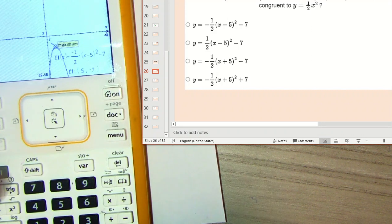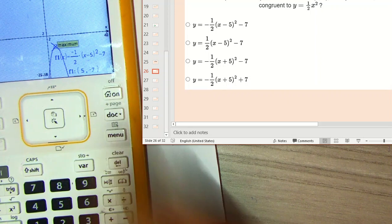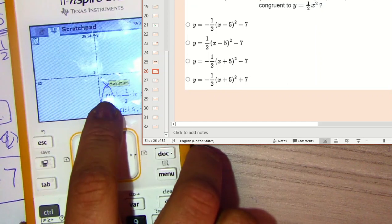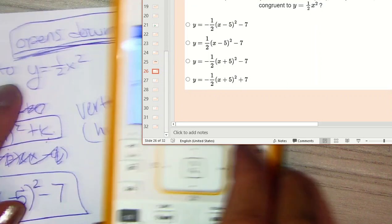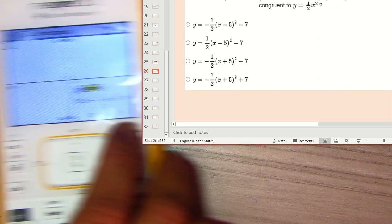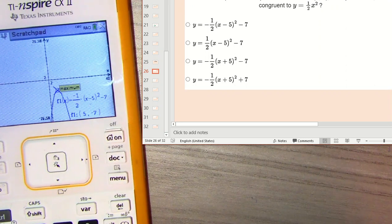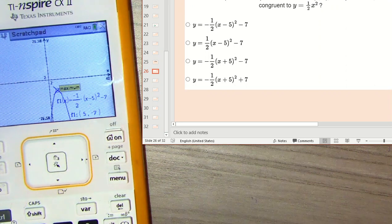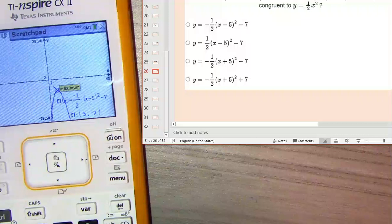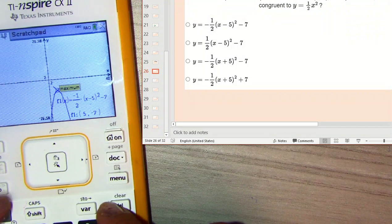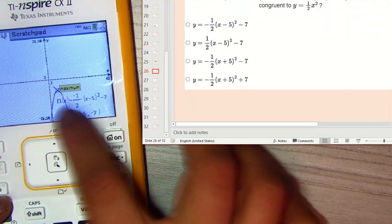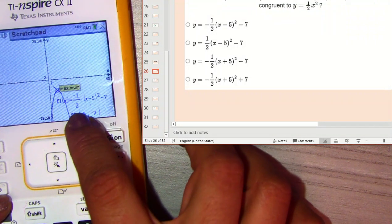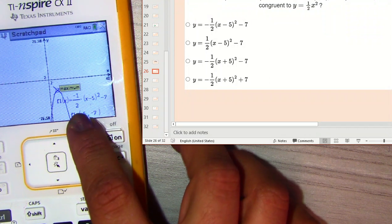And then we're going to check that it opens down. It does. And then as far as congruent to this other equation, again, you just kind of want to think of what congruent means. Congruent means the same. So we're looking for an equation that has the same. Well, definitely the one half is there. So that's what the one half does.